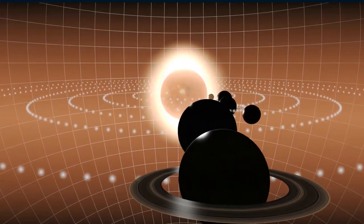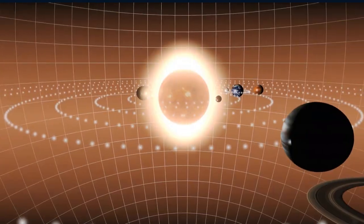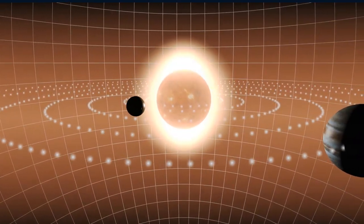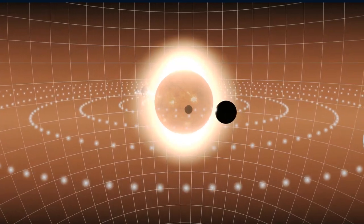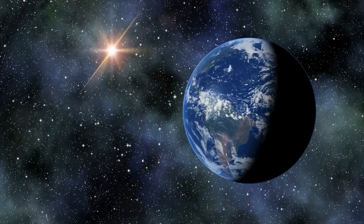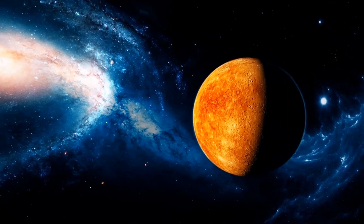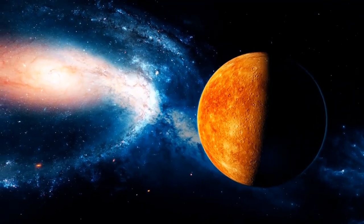While each planet in our solar system is unique, the eight planets can generally be grouped into two different categories. The inner rocky planets, such as Mercury, Venus, Earth, and Mars, and outer gas giants such as Jupiter, Saturn, Uranus, and Neptune. Earth is the only planet in our solar system's habitable zone. Mercury and Venus are not in the habitable zone because they are too close to the sun to harbor liquid water.